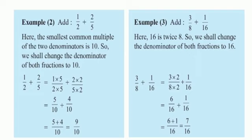Now look at the third example: 3 upon 8 plus 1 upon 16. Here 16 is twice 8, so we shall change the denominator of both fractions to 16. Since 16 is divisible by 8 — 8 twos are 16 — we only need to multiply the first fraction. So 3 multiplied by 2 upon 8 multiplied by 2. If you multiply the denominator by a number, you must multiply the numerator by the same number.